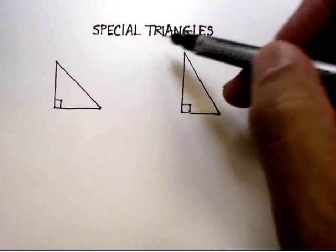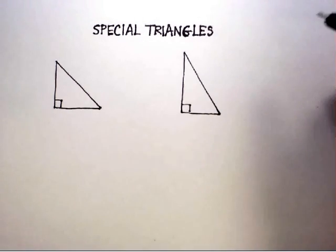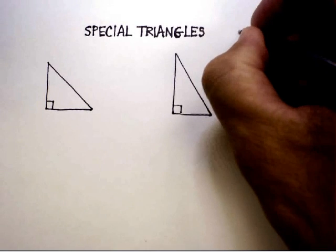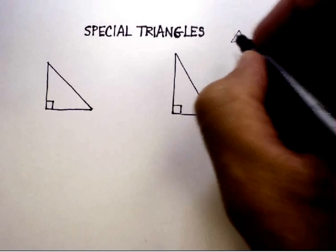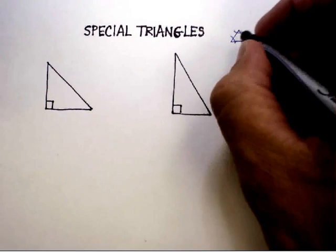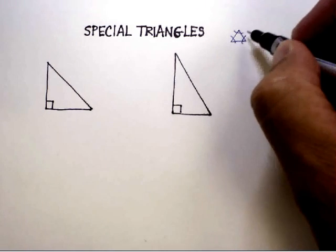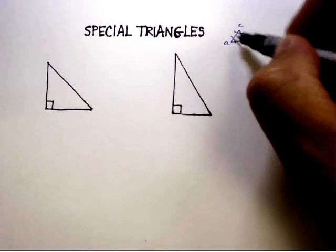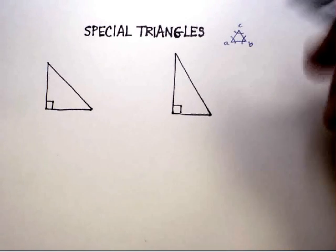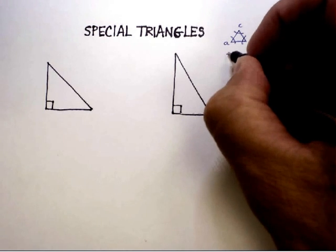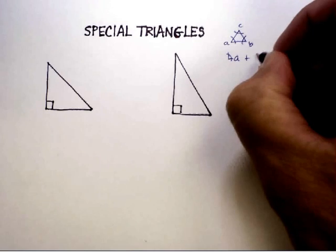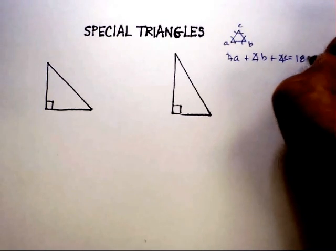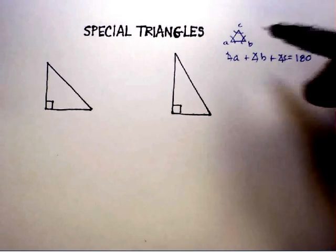In this video demonstration, we're going to talk about what are called special triangles. Why are they special? Because we know a little bit about triangles. When you think of a triangle, one of the things that probably everyone knows is that when you add up all the angles inside — angle A plus angle B plus angle C — you're going to get 180 degrees. That's one of the universal truths we know about triangles.